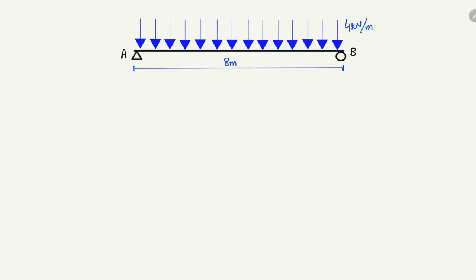Here is a simply supported beam of 8 meter length with a uniformly distributed load of 4 kN per meter acting on the whole beam. Support A is a hinge support and support B is a roller support. The hinge support can take horizontal reaction, but in this case it will be zero because there is no horizontal load acting on the beam.